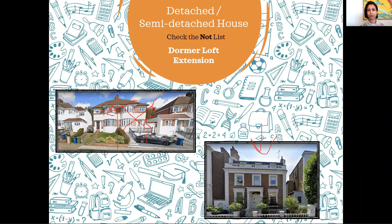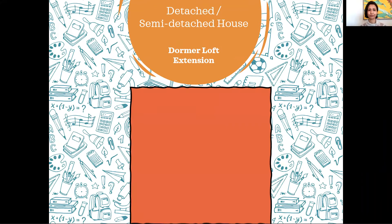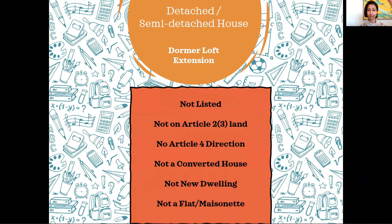Now that you're sure of what type of house your property is, there are some other conditions attached that you need to be clear about. Your house should not be a listed building. It should not lie on Article 2 land — that is areas of outstanding natural beauty, conservation zones, and other protected habitat. Your house should not have an Article 4 direction implemented on it, as that will restrict extensions under PD rules. Your house should not have been converted from a previous use, it should not be a new dwelling, and most of all it should be a house — not a flat or maisonette. To find out if any of this applies, check your property deed papers, do an online search with your postcode, or ask your appointed architect or designer.